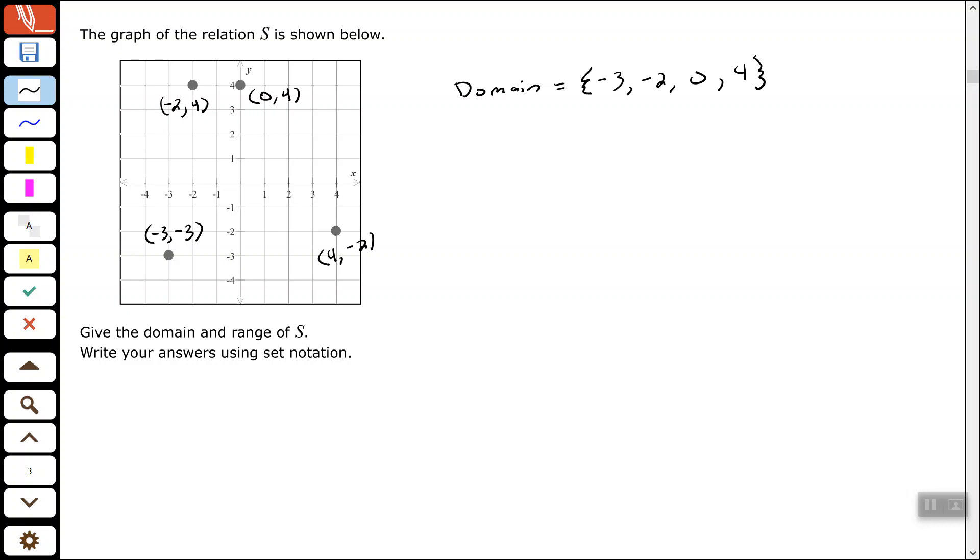So just the first element in each ordered pair would represent your domain. And let's see here, the range would be the y coordinates in this case. So for the y coordinates, we have negative three, negative two, four, and four.